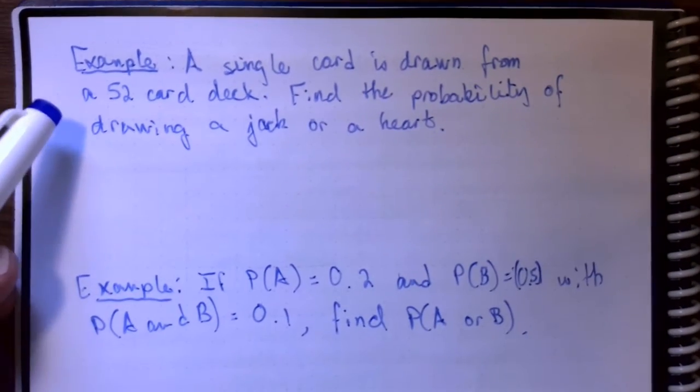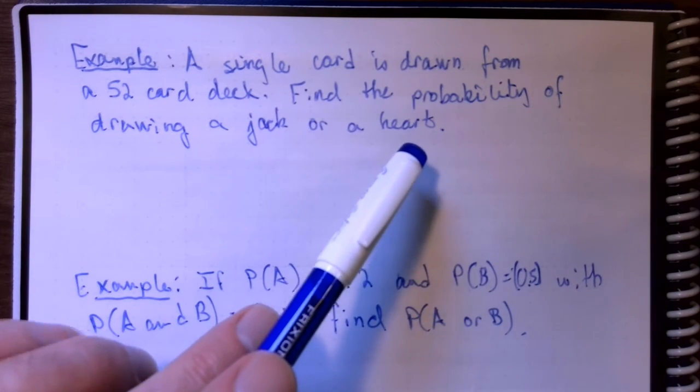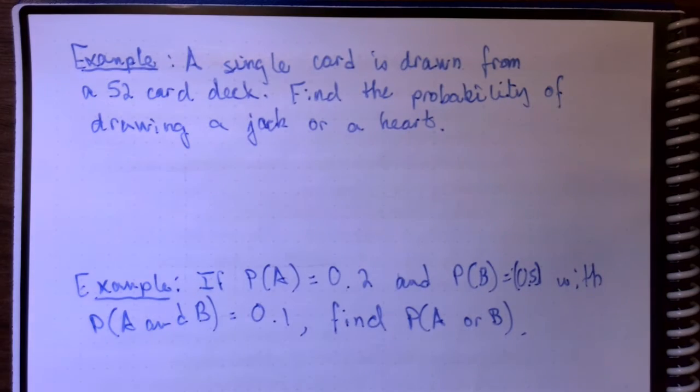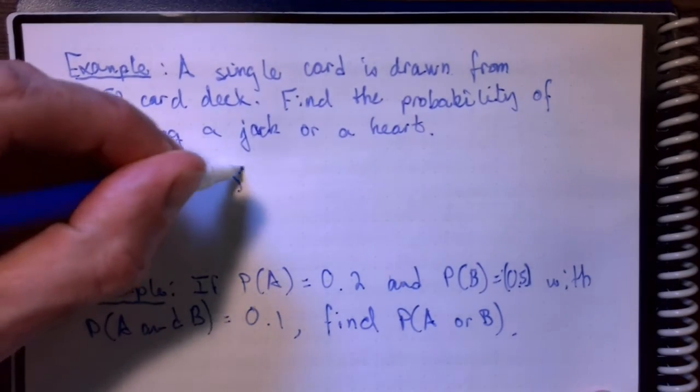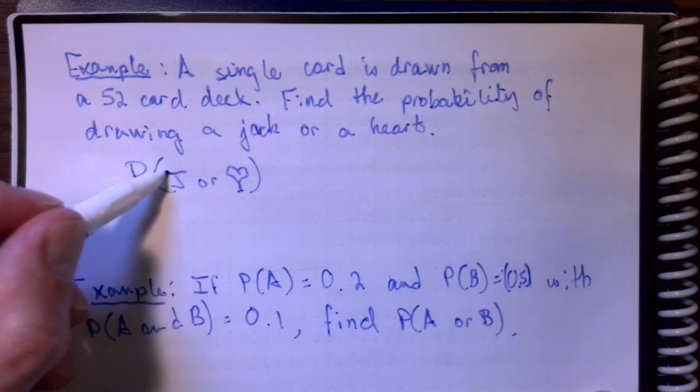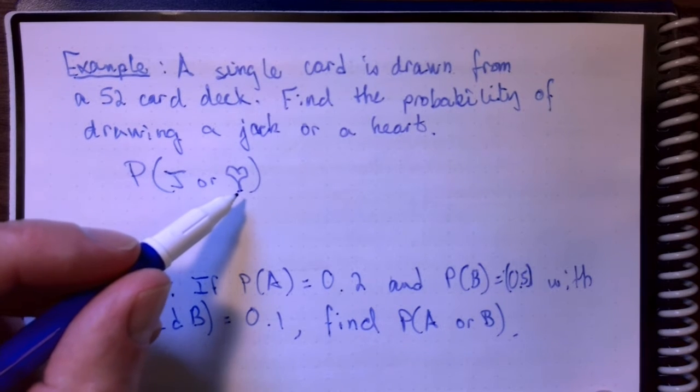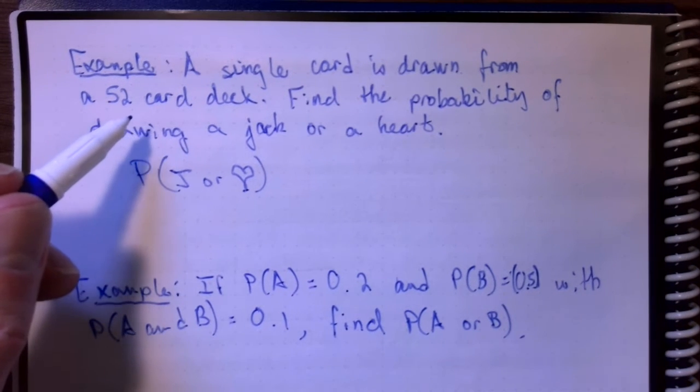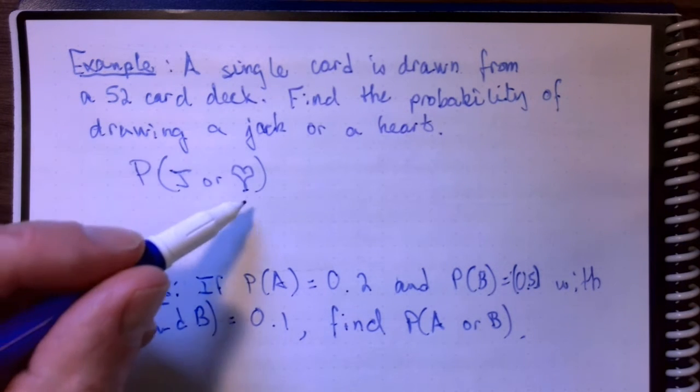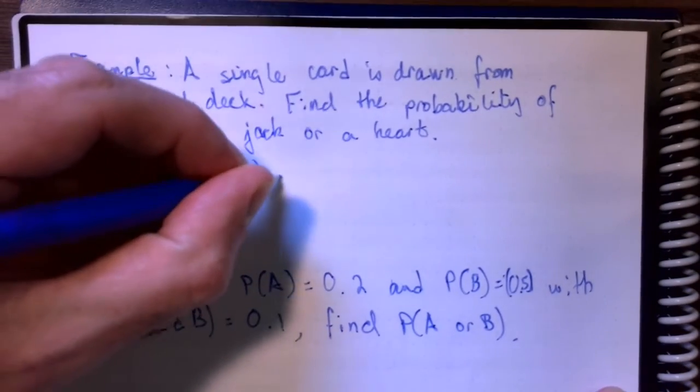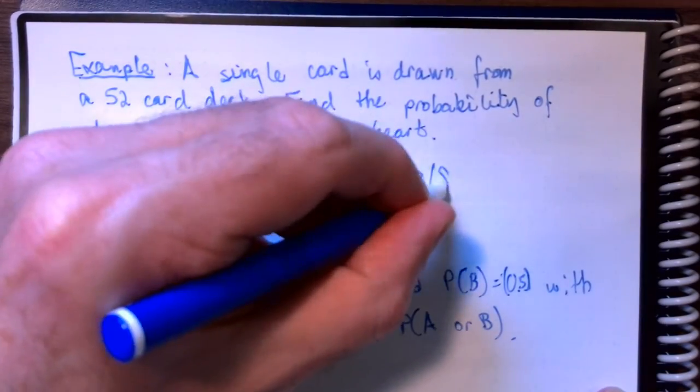Let's imagine this. We're drawing a single card from a standard 52-card deck. And we want to find the probability of drawing a jack or a heart. There are, of course, four jacks in the deck. There are 13 hearts. 52 cards in the deck, four suits. If you take 52, divide by four, you get 13. So, there's 13 cards in each suit.